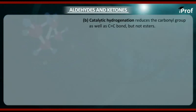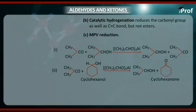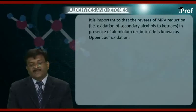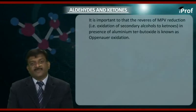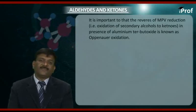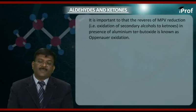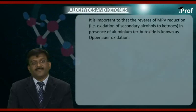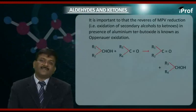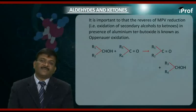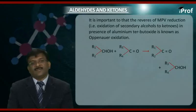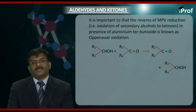Third, the MPV reduction. It is important to note that the reverse of MPV reduction — that is, oxidation of secondary alcohols to ketones in presence of aluminium tertiary butoxide — is known as Oppenauer oxidation. The reaction involves RCH(OH)R reacting with a ketone R'C=OR'.